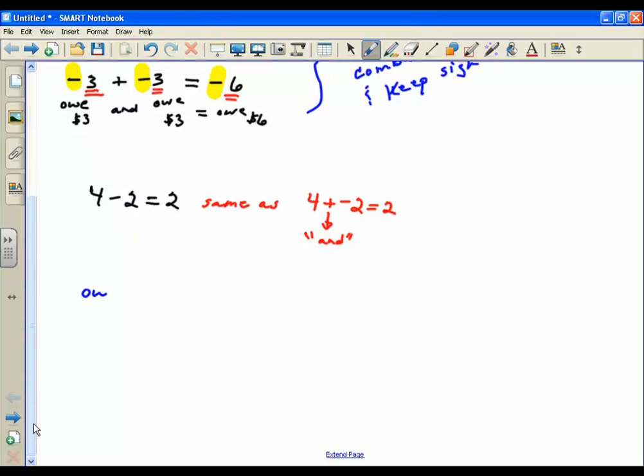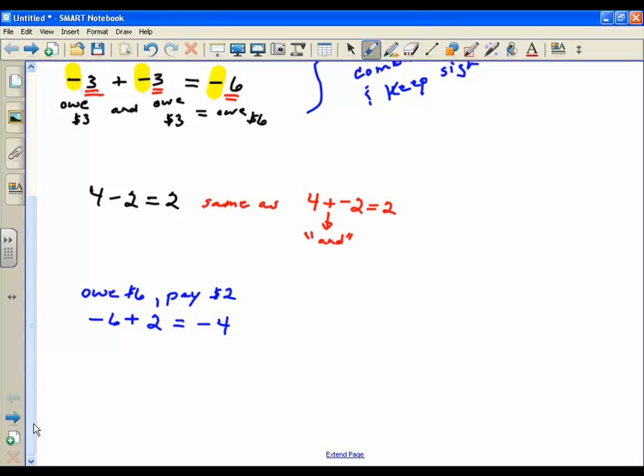Let's start with something negative. I owe 6 dollars, but I'm going to pay 2 dollars of that debt. So I owe 6 dollars, negative 6 dollars. And I pay 2 dollars. How much do I owe now? I owe 4 dollars, right? The way you do that is actually very similar to how you did the top thing.